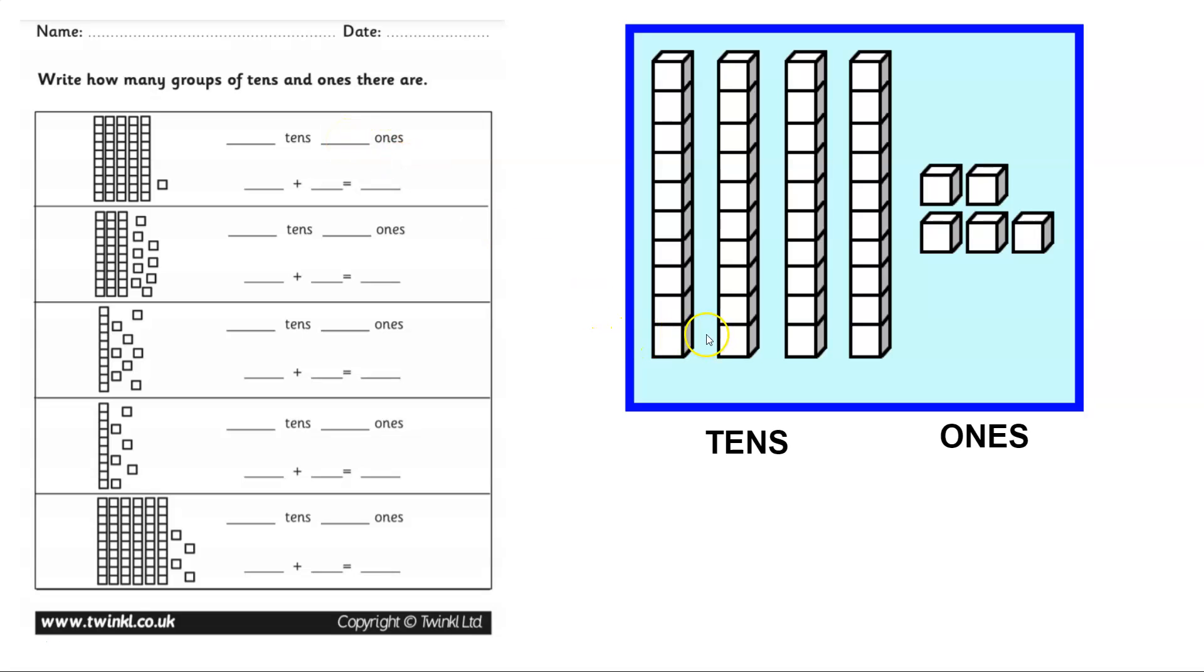Like over here, these are groups and we want to know the groups. So we have one, two, three, four groups of ten. And over here, we have one, two, three, four, five ones.